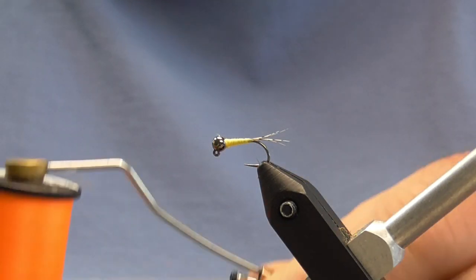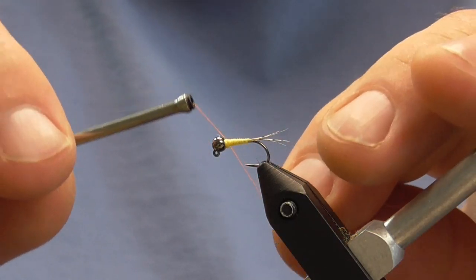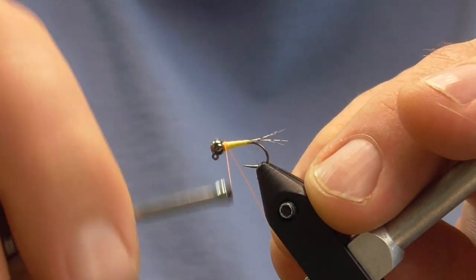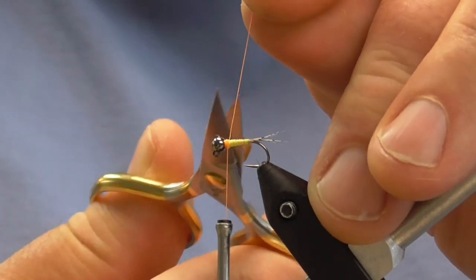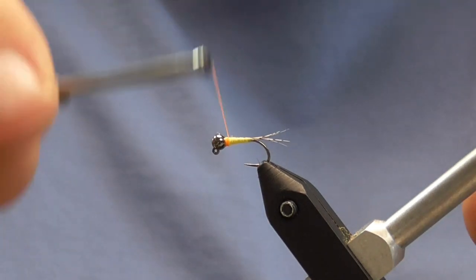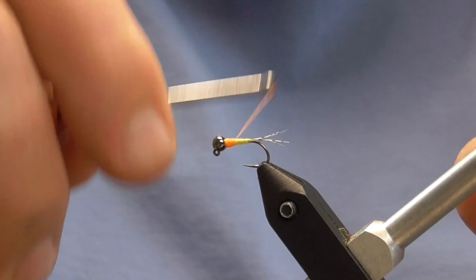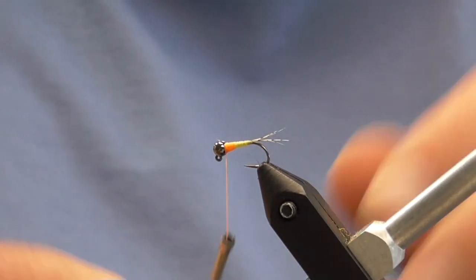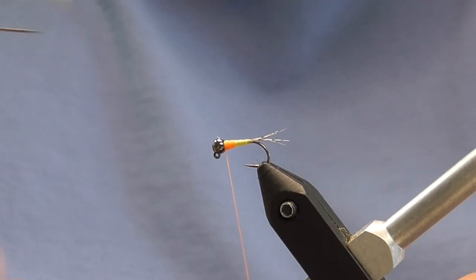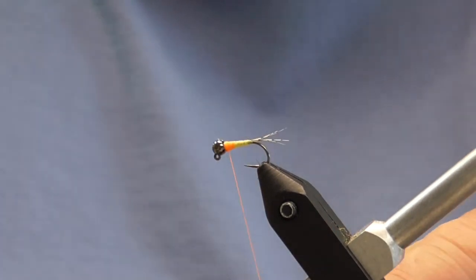Next, we're going to get a fluorescent orange Semperfly 8-0, and we're going to start that right behind the bead. Make a couple of wraps to secure it down and tie over our tag, and then trim. We're going to wrap down about a third of the way down the body before we whip finish again.